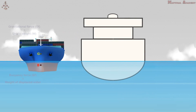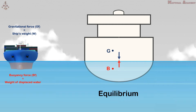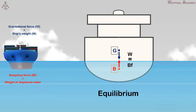Now, for a floating body, in this case a ship, to be in equilibrium or remain stable, the two forces should be equal and acting in opposite directions. The buoyancy force acting vertically upward through the center of buoyancy should be equal to the weight of the ship acting vertically downward through the center of gravity. The center of gravity and buoyancy should be on the same vertical line, called the centerline.